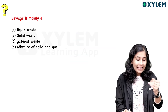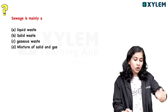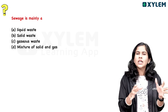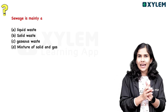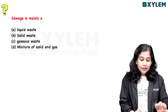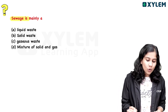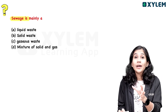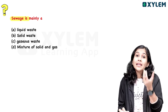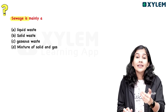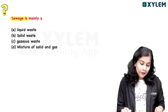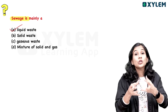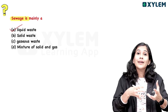The questions are mainly about liquid waste, solid waste, gaseous waste, and mixture of solid and gas. What is the main item of the wastewater? What is the main item of the liquid waste? What is the correct answer for liquid waste?